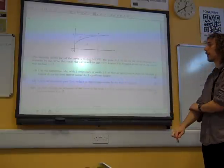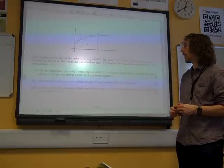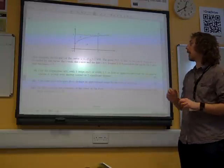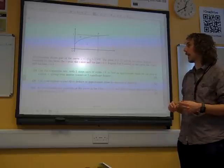The diagram shows part of the curve y equals minus 3 plus 2 root x plus 4. The point p, 5, 3, lies on the curve. Region A is bounded by the curve, the x-axis and the y-axis.